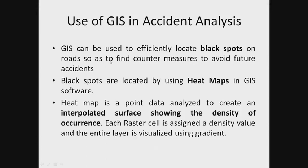So how is GIS used in accident analysis? GIS can be used efficiently to locate black spots on roads in order to find countermeasures to avoid future accidents. A black spot is basically a 500-meter stretch of road on which at least 5 fatal accidents have occurred in the previous 3 years. Black spots are located using heat maps in GIS software.